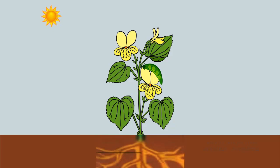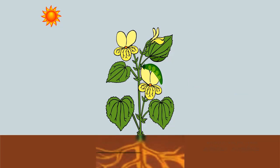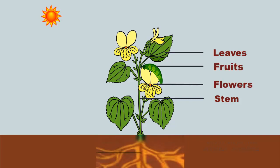The aerial part of the plant body above the ground is known as the shoot system. The main axis of the shoot system is called the stem. The shoot system consists of stem, leaves, flowers, and fruits. The stem grows above the soil and it grows towards the sunlight.